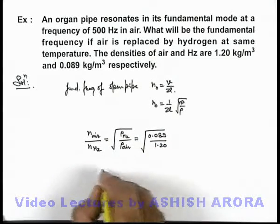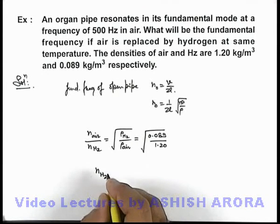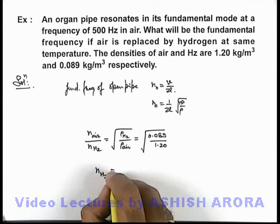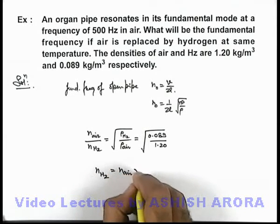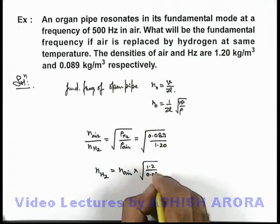So on simplifying, we'll be getting frequency of hydrogen when it is filled in the organ pipe can be written as frequency in air multiplied by root of 1.20 by 0.089.